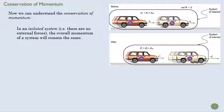So let's think about a collision between two cars, like the one we have here. In an isolated system where there are no external forces, the overall momentum of a system will remain the same. So we're going to define our system as this guy here, this little black line, right?